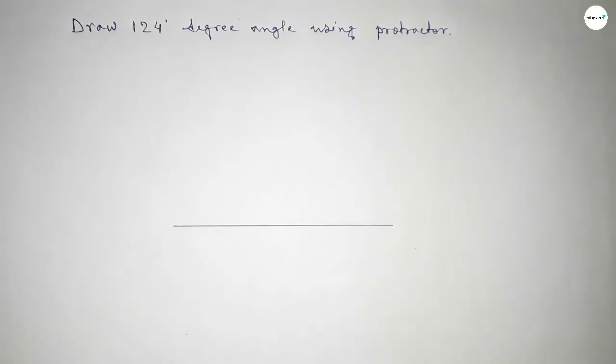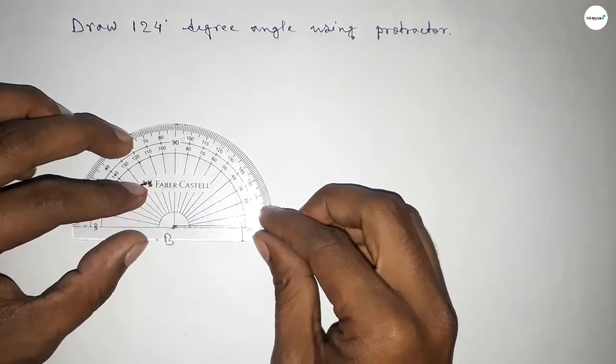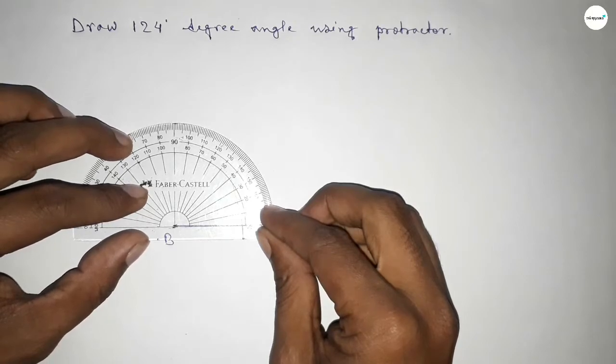First, drawing here a line. Next, taking here point B and here C. Now, putting the protractor on the point B perfectly, then counting the angles.